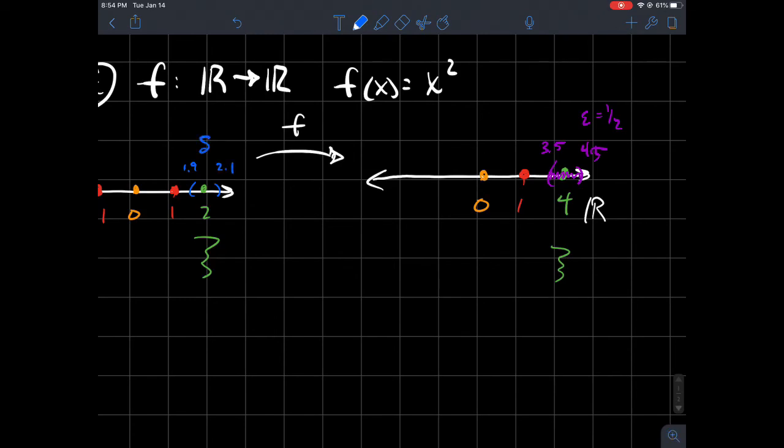What if I did 1.9 and say 2.1, so in this case I'm saying let's take delta equal to 0.1. This blue interval here is the ball centered at two of radius 0.1 if you want to think of it that way.